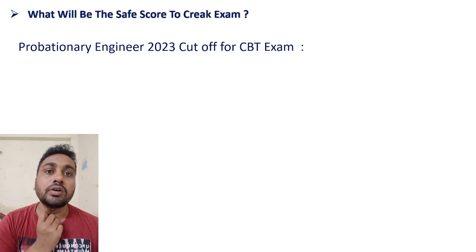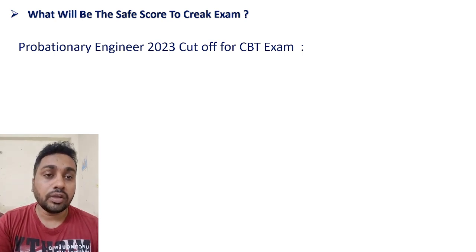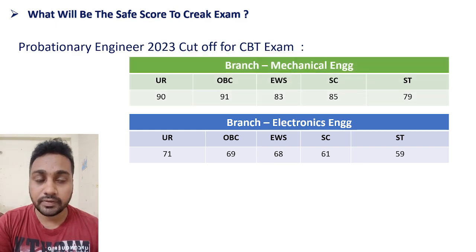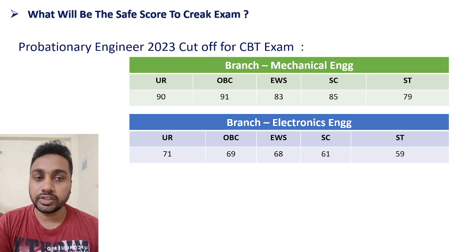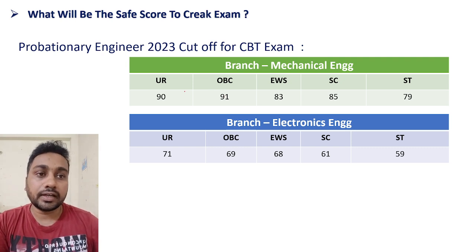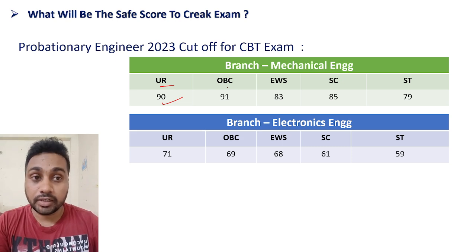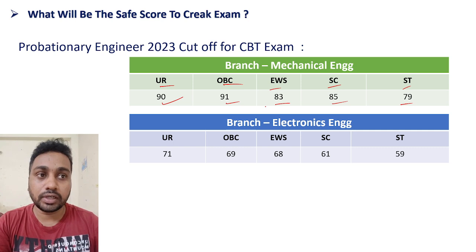Now we are going to talk about what will be the safe score to clear this exam. If you see the previous cutoffs for mechanical branch: in the 2023 Professional Engineer exam, the cutoff for mechanical engineering for general category was 90 marks, EWS was 91, SC was 83, and ST was 79.